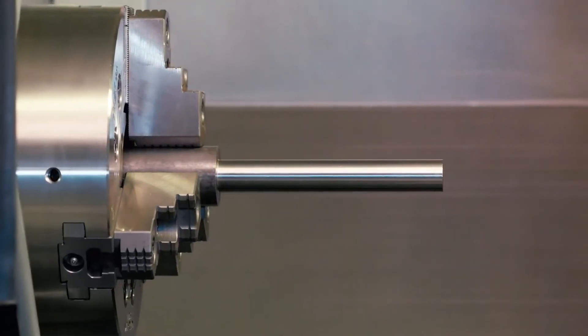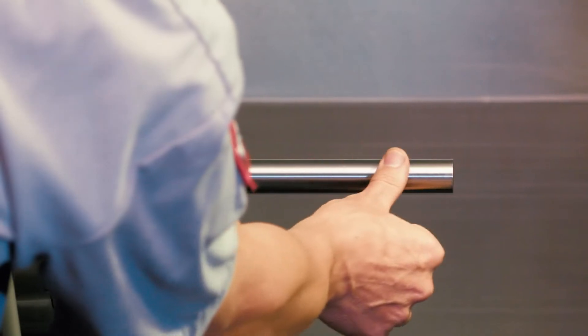We can see that the bar cut using SSV has a much better finish. If we had to cut this part without a tailstock, which we know we shouldn't, SSV saves our part.